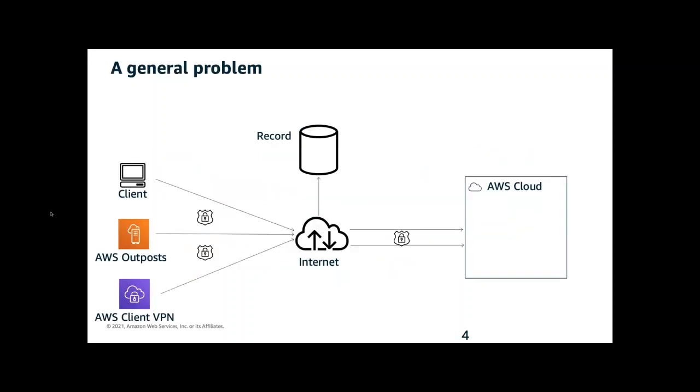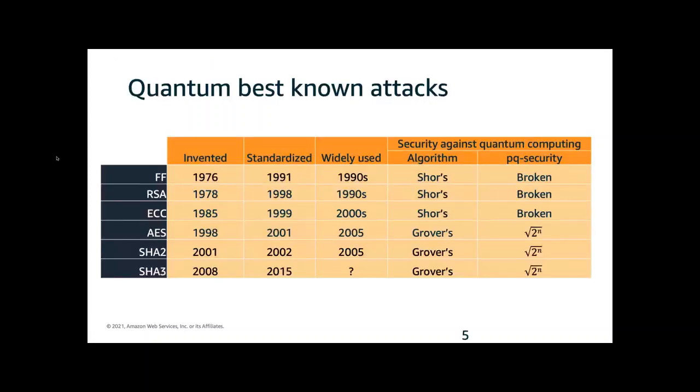One of the problems we worry about is nearly all our customers are transmitting their data over the internet using public key cryptography or public key protocols. An adversary can selectively intercept and store this data. At some point in the future, a new best known attack appears, at which time an adversary can harvest the recorded data, potentially learning customer secrets.